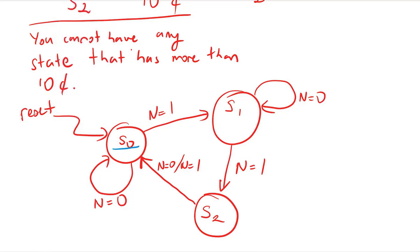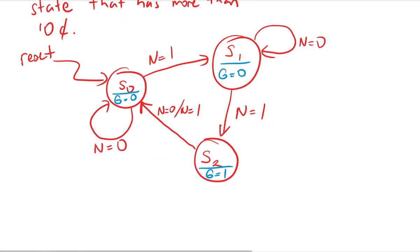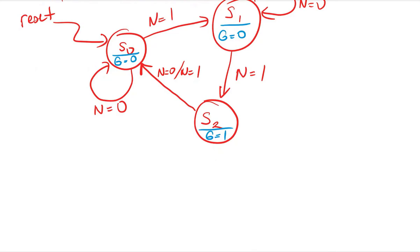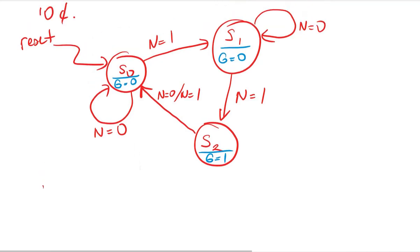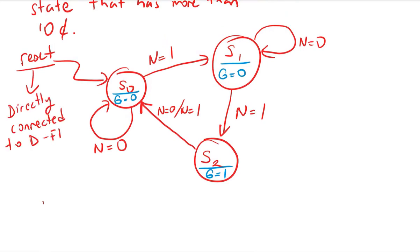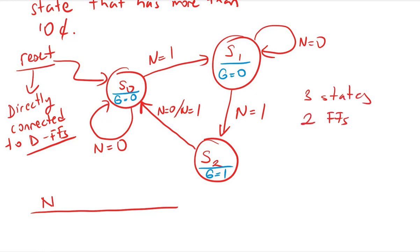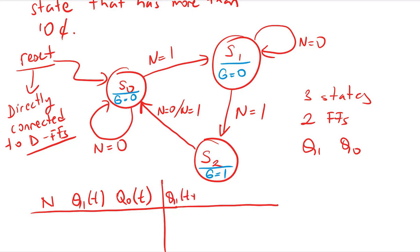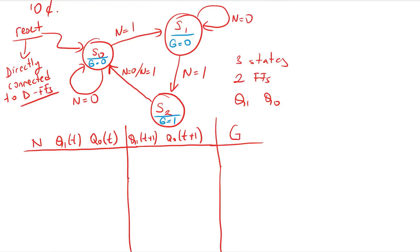Since this is a Moore state machine, I write outputs inside the states: g=0 for S0, g=0 for S1, and g=1 for S2. Now we build our state table to determine the next-state logic. The input is n; the reset is directly connected to the D flip-flops so it won't appear in the table. With three states I need two flip-flops, Q1 and Q0, giving present state Q1(t), Q0(t), next state Q1(t+1), Q0(t+1), and output g.